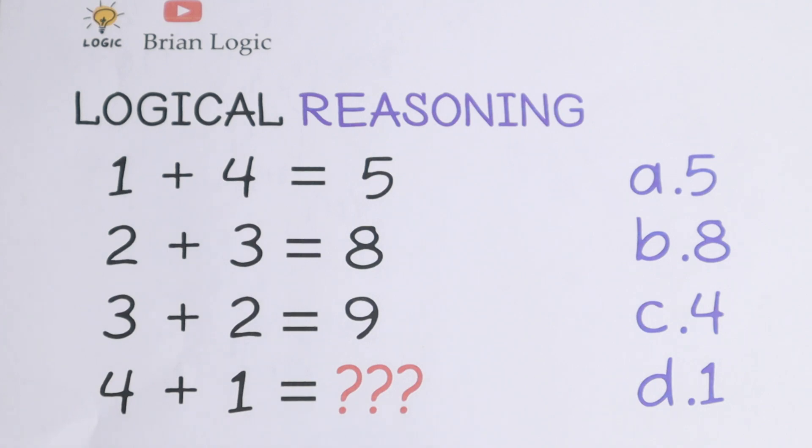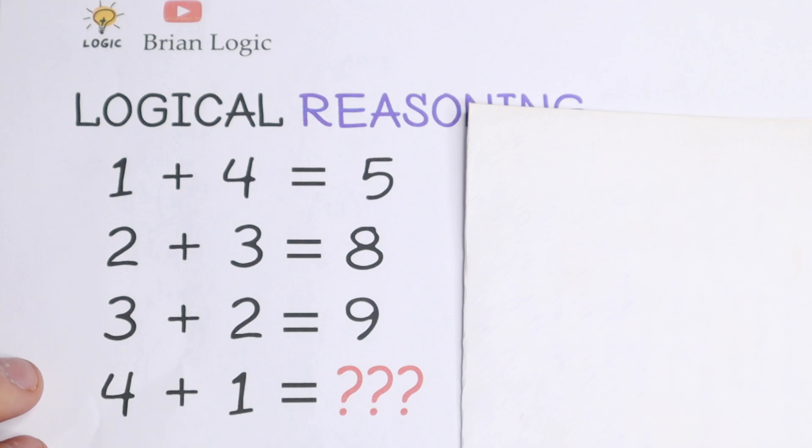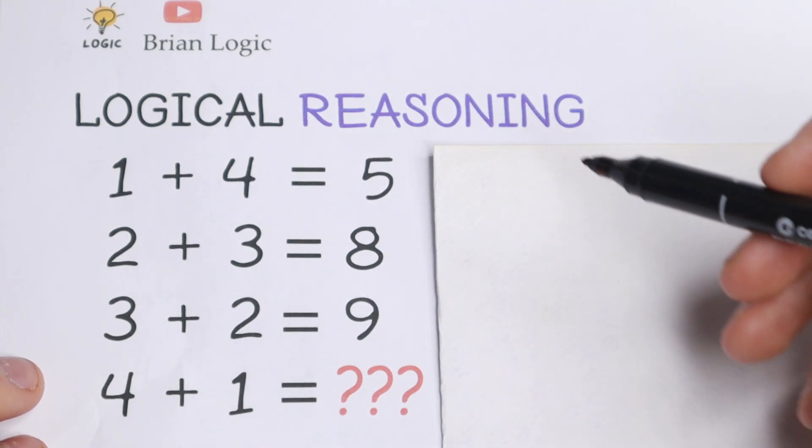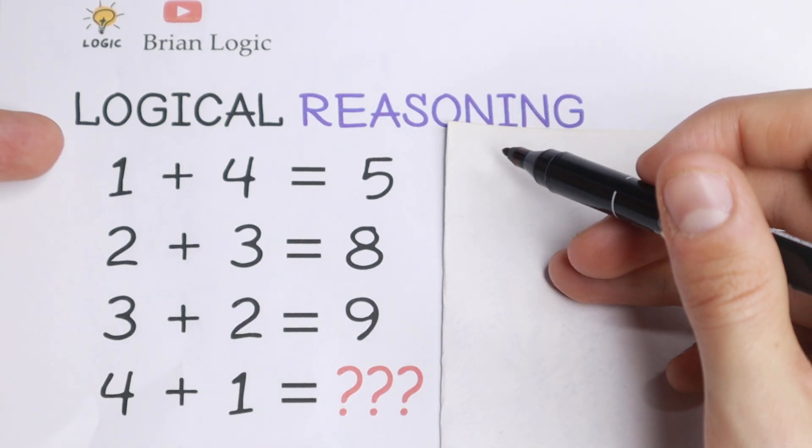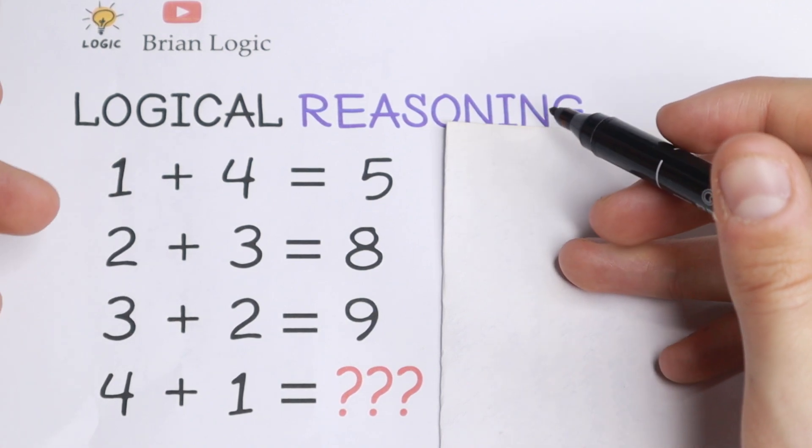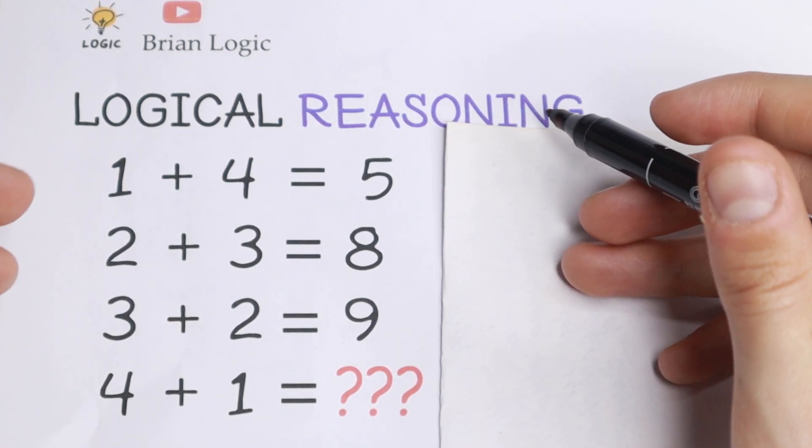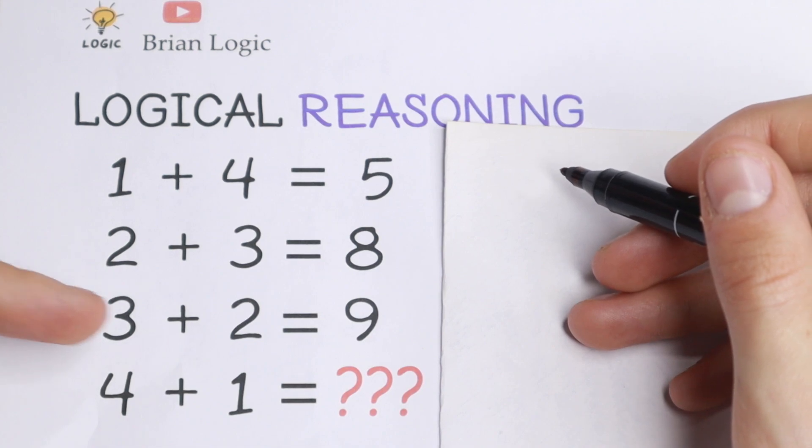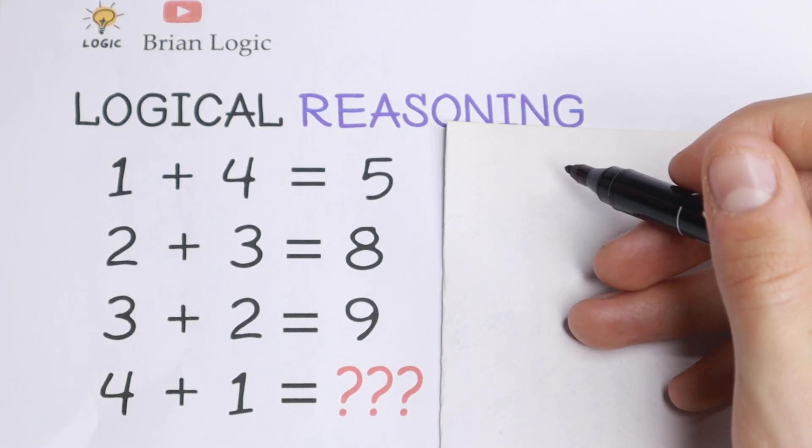So let's try to find the pattern between all of these numbers. We have 1 plus 4 equal to 5, which is correct. 2 plus 3 equal to 8, this is not correct. So I don't see any obvious pattern between all of these numbers. 3 plus 2 equal to 9, this is not correct as well. What's the pattern between all of these numbers?